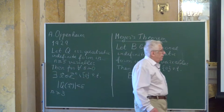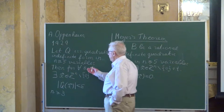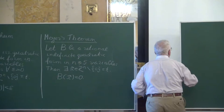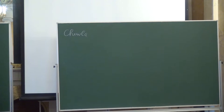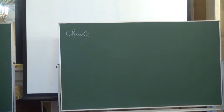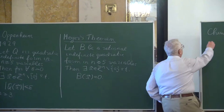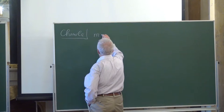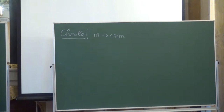Historically the first result in the direction of proving this conjecture was due to Chowla. Before stating what he proved, let me make the following remark: if the conjecture is proved for some dimension m, then it is also proved for n ≥ m. This reduction is very easy.